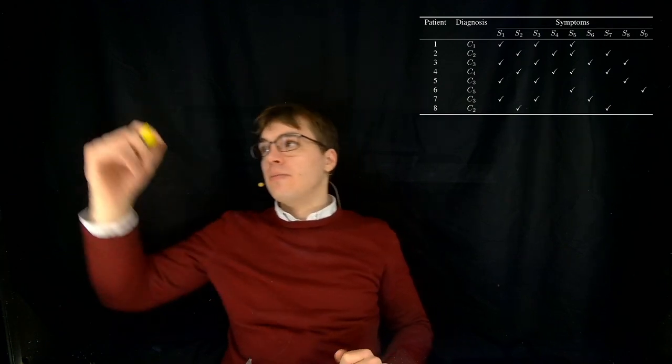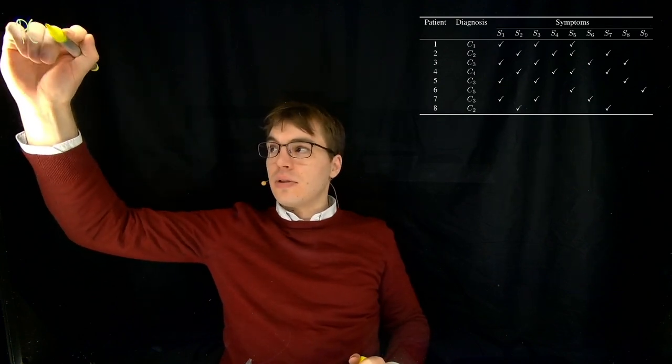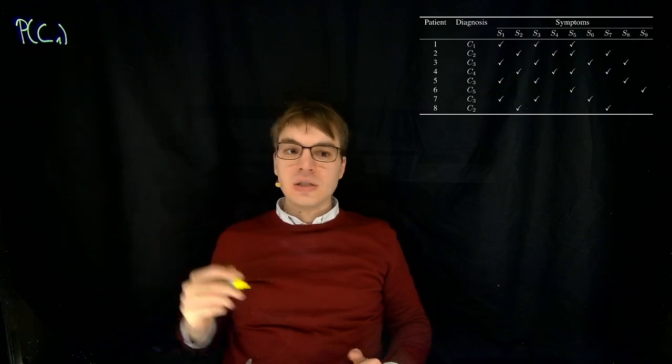And the first step we have to do here is to compute the prior probabilities, P of C_i. Let's do it for the first one, so for the first disease that we observe.